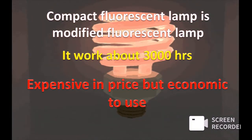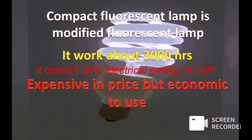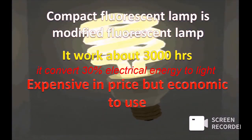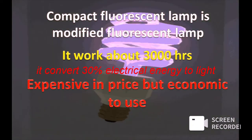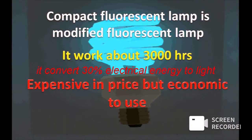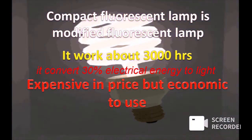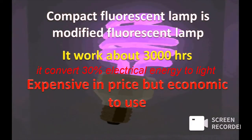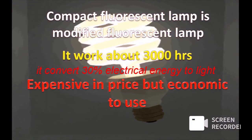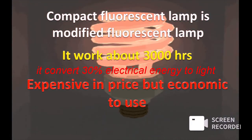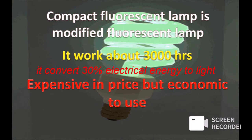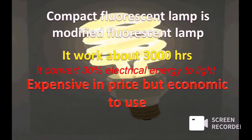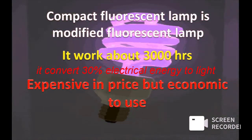A compact fluorescent lamp (CFL) is a modified fluorescent lamp used to save electrical energy. It is expensive in price but economical to use, and it has an average lifespan of about 3,000 hours.